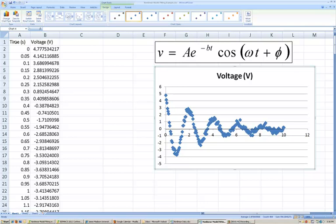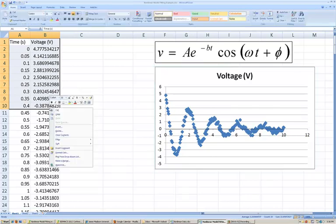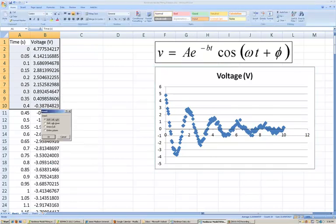Alright, so the next thing that I'm going to do is I'm going to make some space above the data that has been collected, so that I can enter some different parameter values. I'm going to shift all of this data down by inserting some cells.